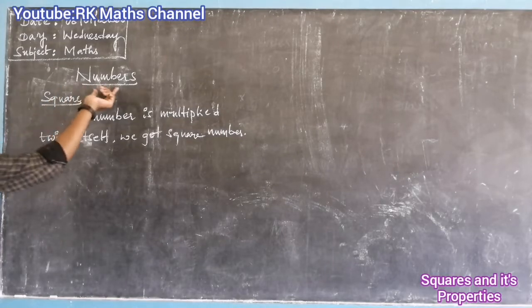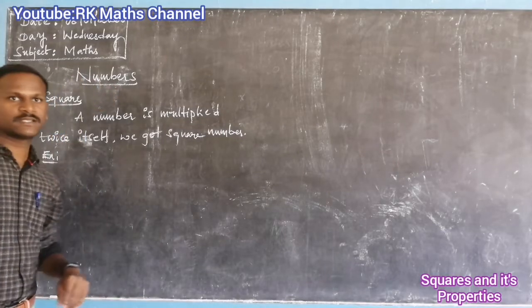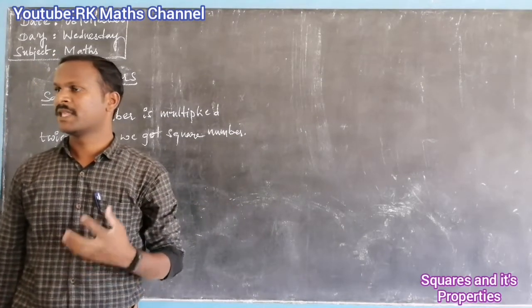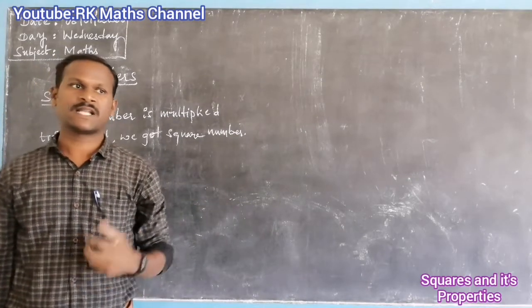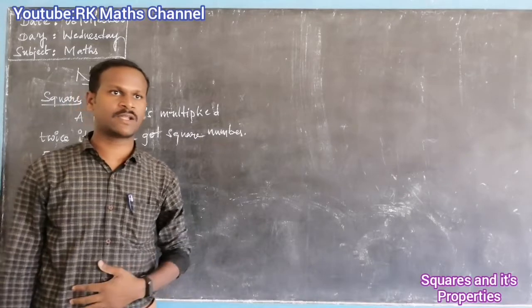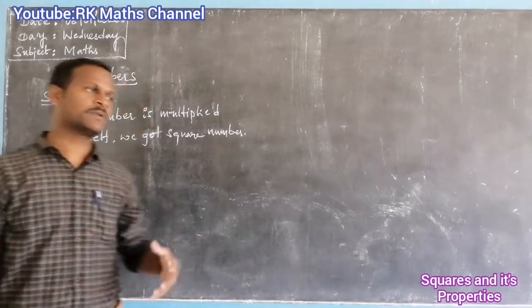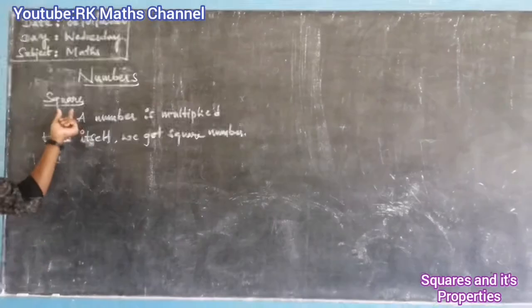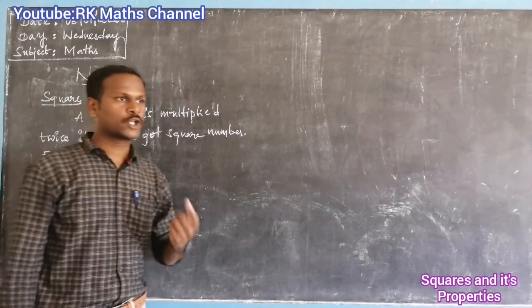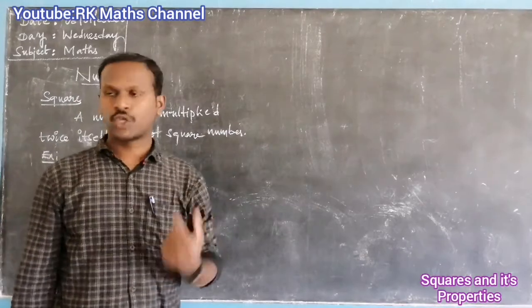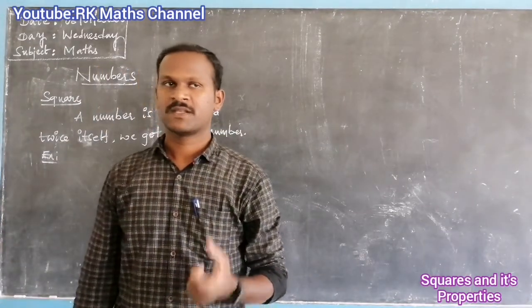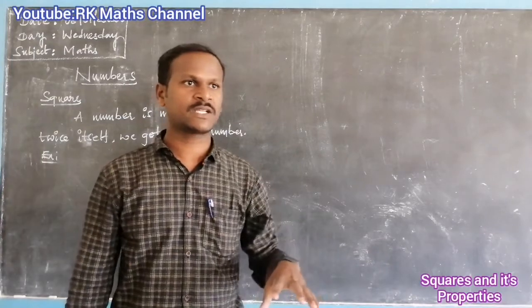Today's topic is Number Systems, which is the 1st Chapter. These systems appear in the last chapter too. This 1st Chapter covers Square Roots, Cube Roots, the number of exponents, and scientific notation.